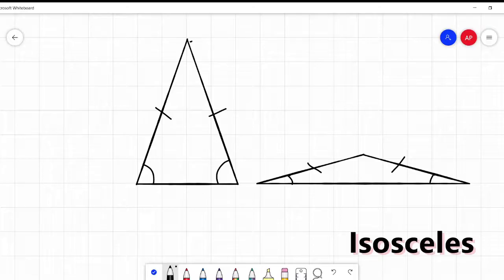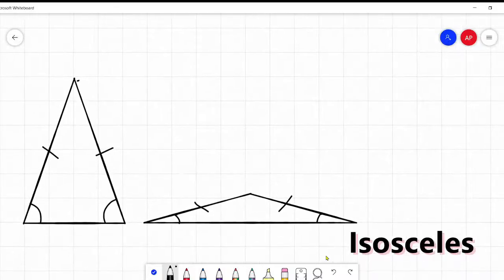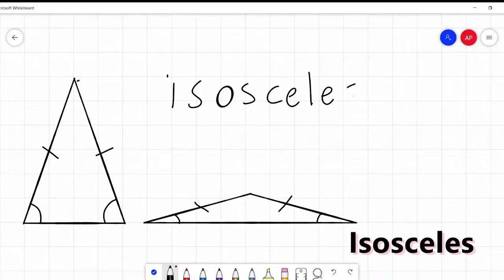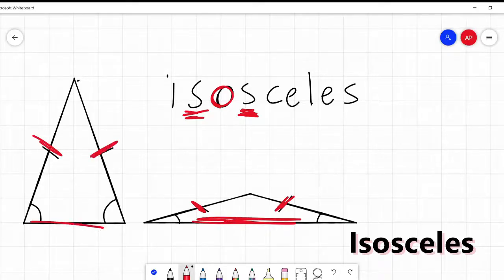A way that I remember isosceles - you have the word isosceles. I have two identical letters and then the one in between. It's just a visual. S, S, and the O in between. So it's like I have my two identical sides and the side in between. My two identical sides, my side in between. Didn't say these would be perfect ways, but they will help you remember. Double sides with one side in between. Isosceles.